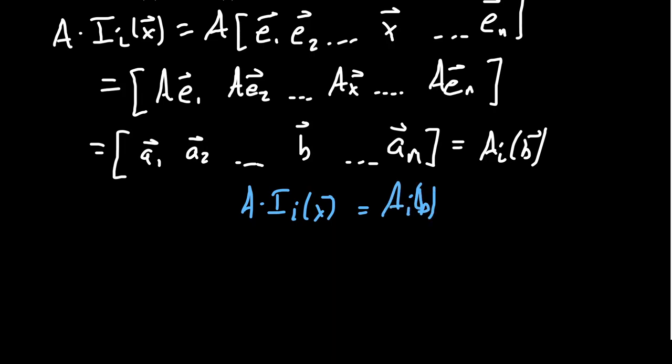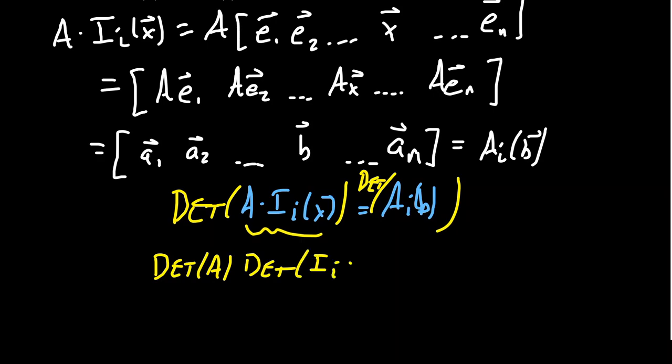With respect to this A_i(b) matrix, we have a factorization: A times I_i(x). So we take A times I_i(x), which equals A_i(b), and we're going to take the determinant of this. Take the determinant of the left-hand side, take the determinant of the right-hand side. The determinant factors—when you have a product inside a determinant, that becomes a product of determinants. So you get det(A) × det(I_i(x)) = det(A_i(b)). This almost establishes the formula we had before.